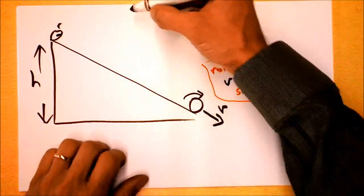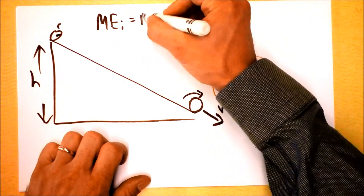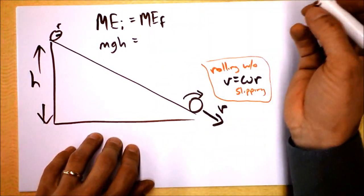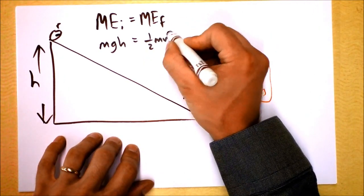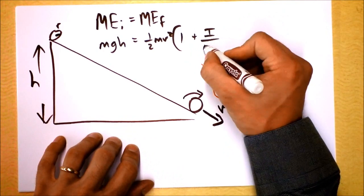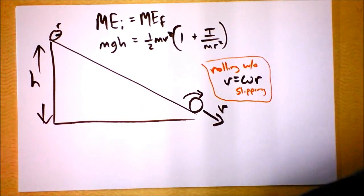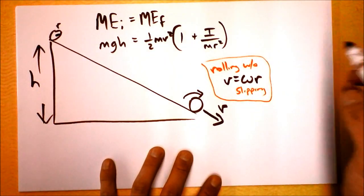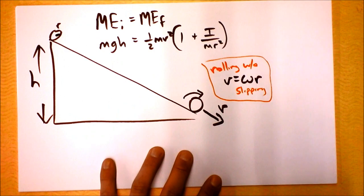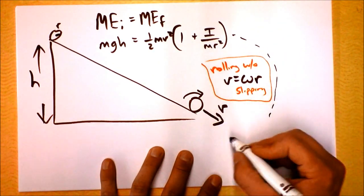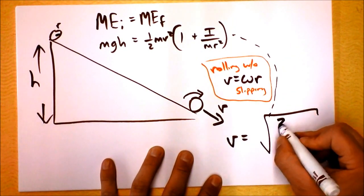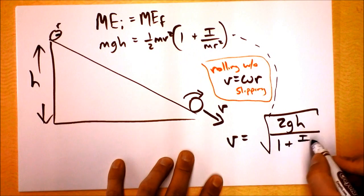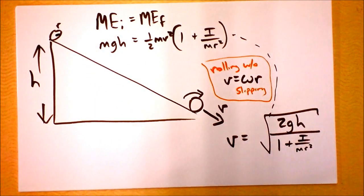We can do some calculations about energy. The initial mechanical energy is the final mechanical energy. Initially, we've got MGH, starts at rest at the top of the hill. Finally, we've got the kinetic energy, and the kinetic energy has this fun form, 1 half MV squared times 1 plus I over MR squared. And we probably want to solve this for how fast it's going, right? We can solve this for how fast it's going. And a little bit of fun algebra yields, ready for it? Do the masses cancel out? You get V is equal to the square root of 2GH. It's not that simple, though. 1 plus, down here, I over MR squared.